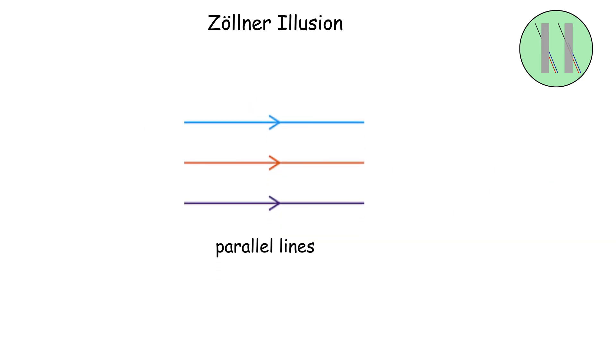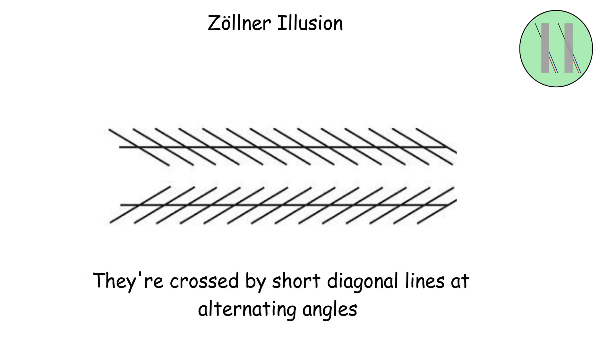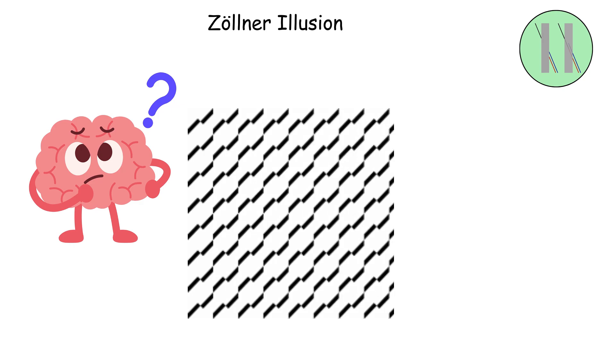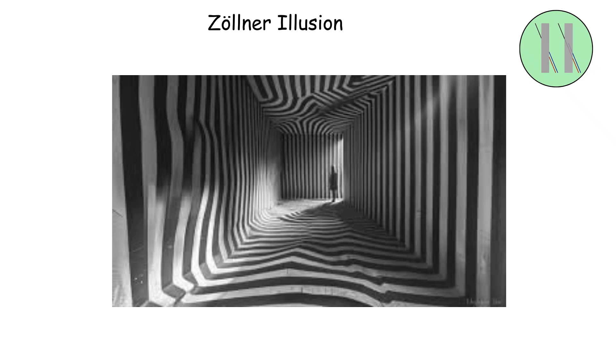You've got a series of parallel lines, completely straight and parallel, but they're crossed by short diagonal lines at alternating angles. Your brain looks at this pattern and swears those parallel lines are tilting toward and away from each other, zigzagging across the page like a drunk driver.